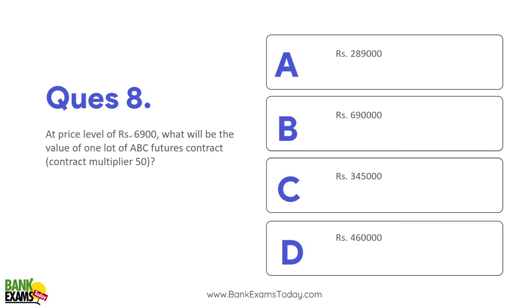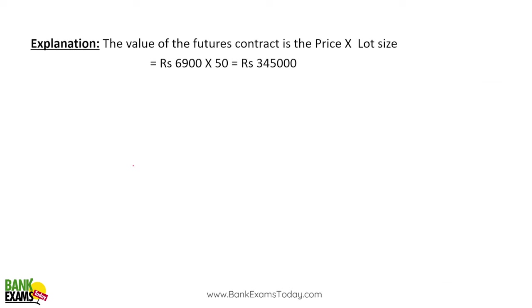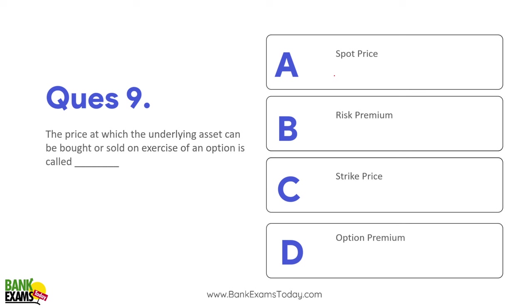Question 8: At a price level of ₹6,900, what will be the value of one lot of ABC futures contracts with contract multiplier of 50? Simply multiply: price × lot size. That is the basic calculation.